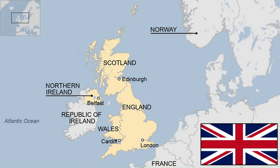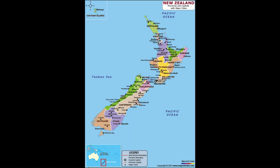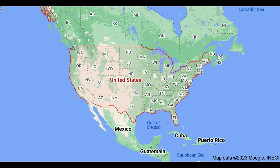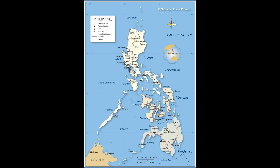In the United Kingdom, the financial year starts from April 6 and ends on 5th April. On the other hand, New Zealand's accounting year begins from April 1 to March 31. The United States is quite different from other countries — it is from October 1 to September 30. The Philippines government's fiscal year begins from 1st January and ends on 31st December.